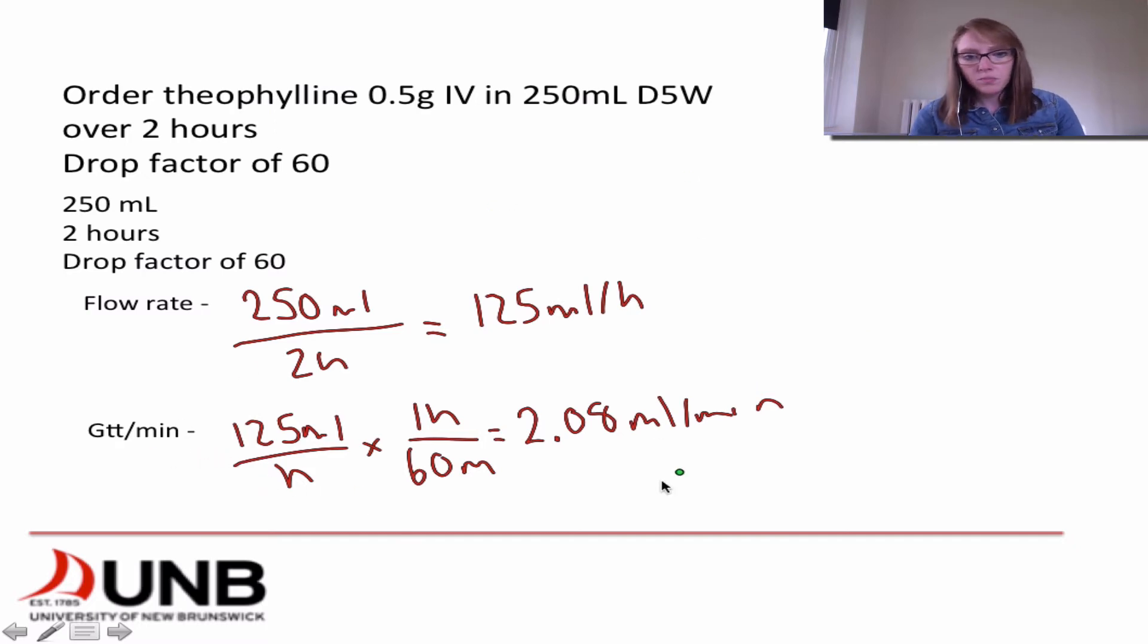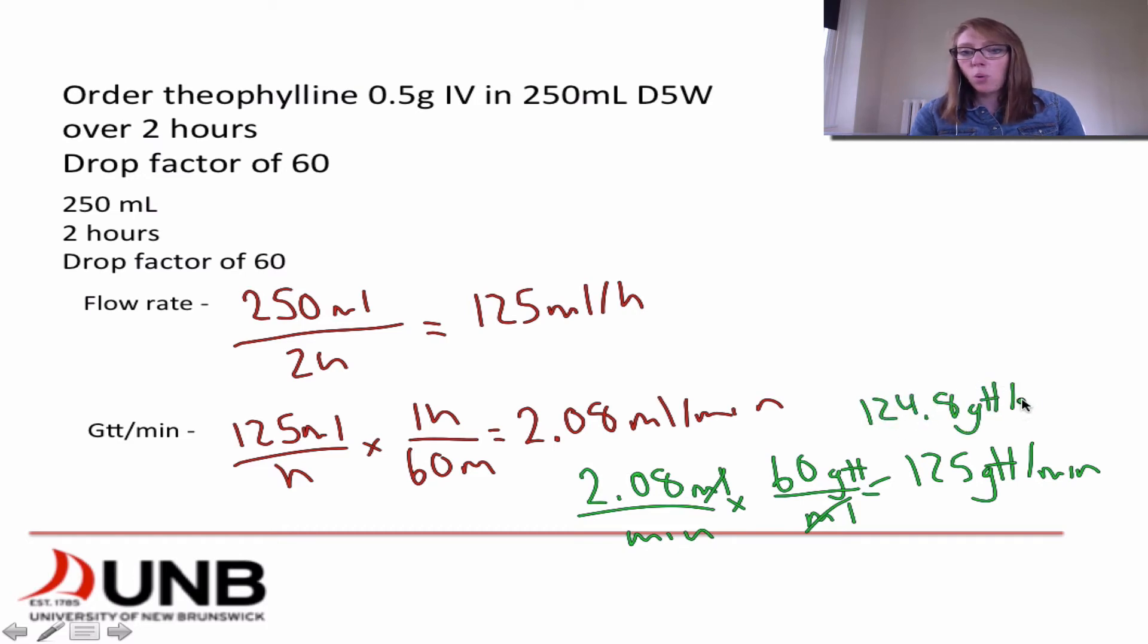Let me just change my pen color. So we're going to have 2.08 mLs per minute. And we know that we're multiplying it by our drop factor, which is 60 drops per mL. So our units are going to cancel out here. And we find that we are going to get 125 drops per minute. And when you calculate this out, it's 124.8 drops per minute. But we know that we can't have 0.8 of a drop. That's just not something that we can calculate. It's full drops. That's all you can do. So we're going to round. We know that 8 would mean that we're bumping up the 4. So it's 125 drops per minute.